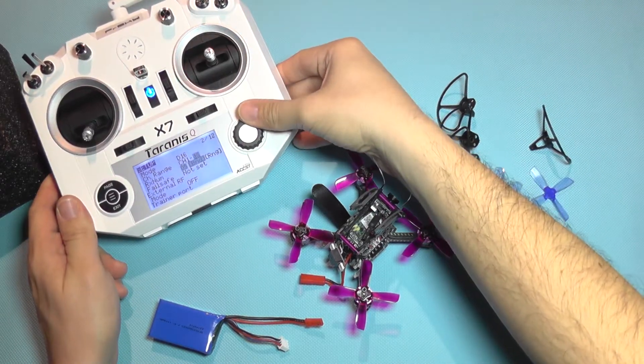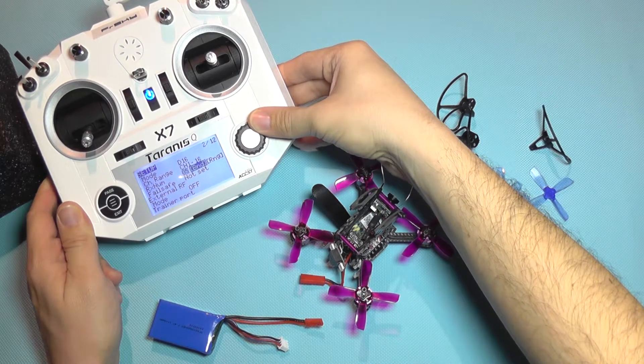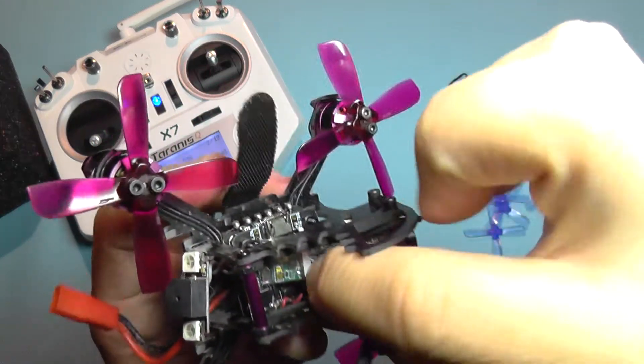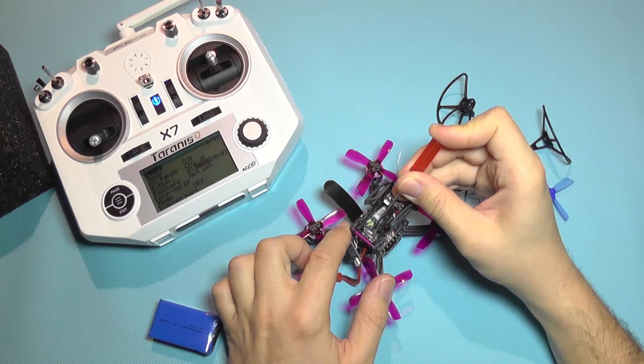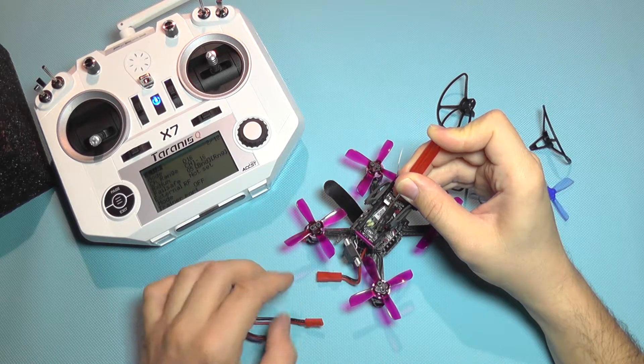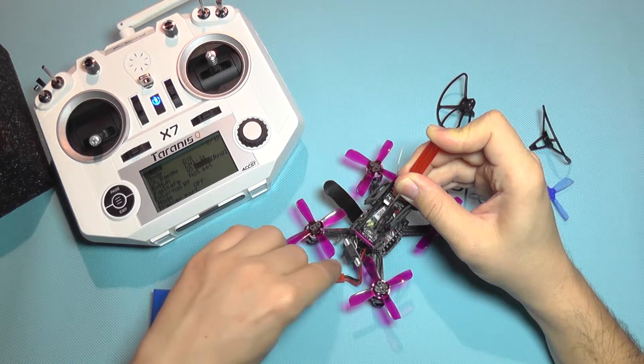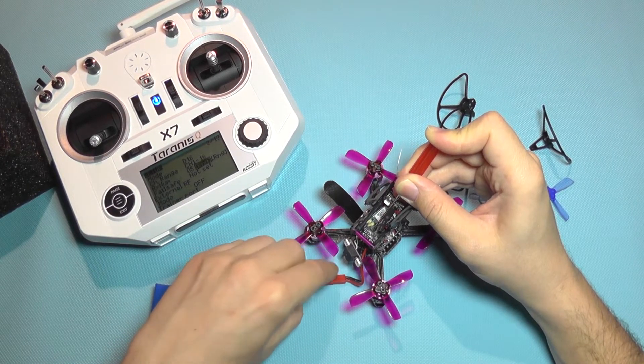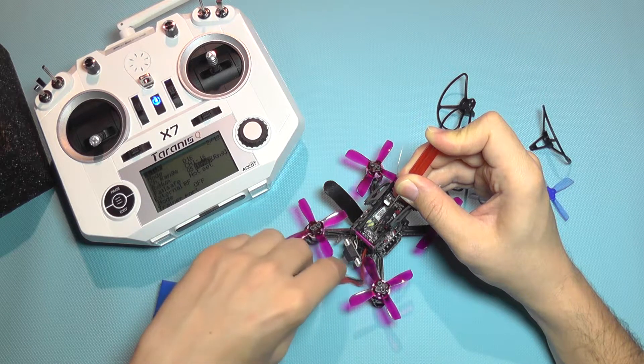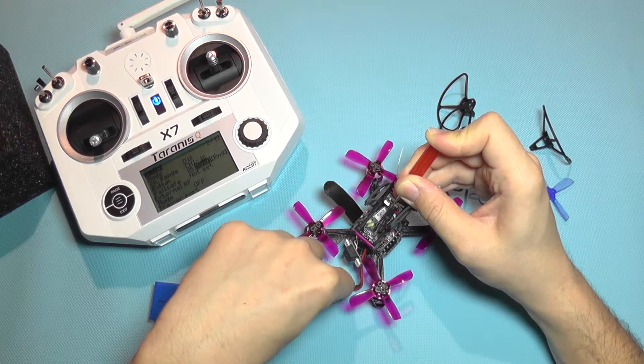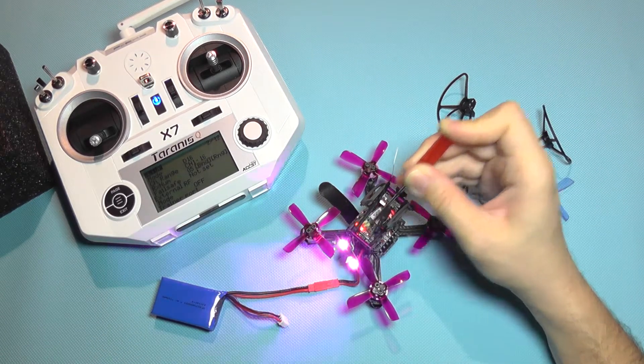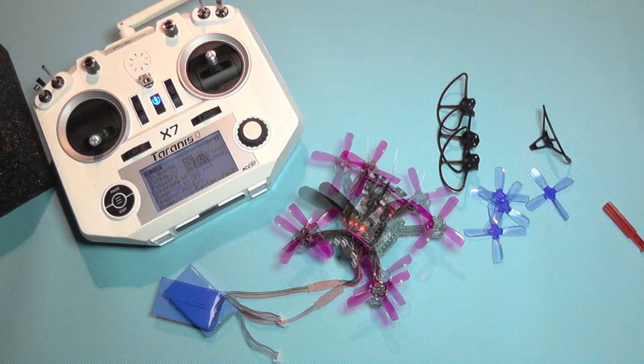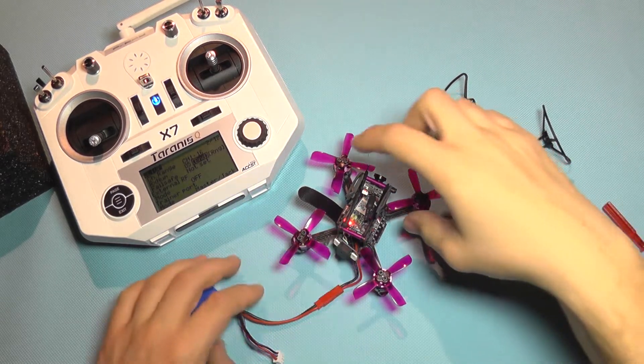I'm on 16 channels so I'm going to select bind. There is a small push button here, this golden push button. I'm going to use a screwdriver to press it. With it pressed I'm going to connect the battery now. It's kind of hard to do with just one hand, and I'm going to let go of the switch.